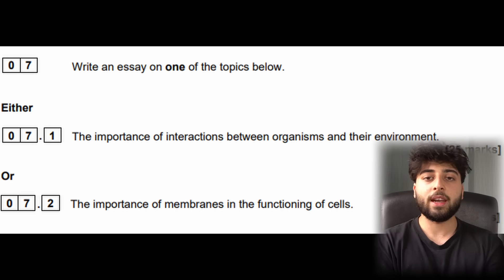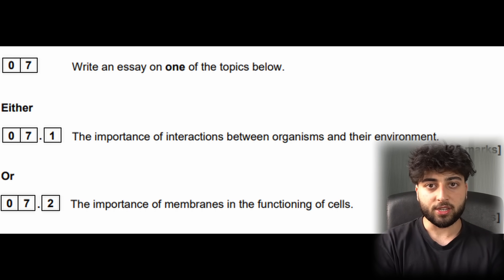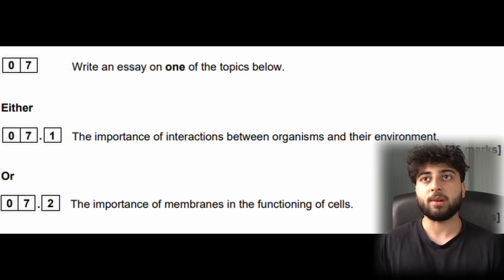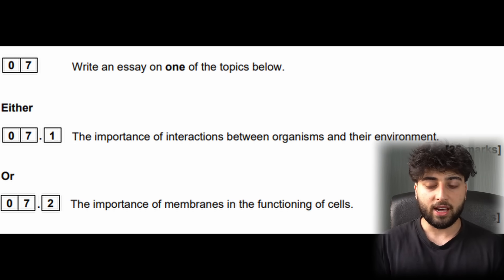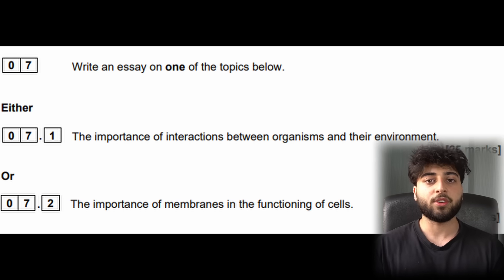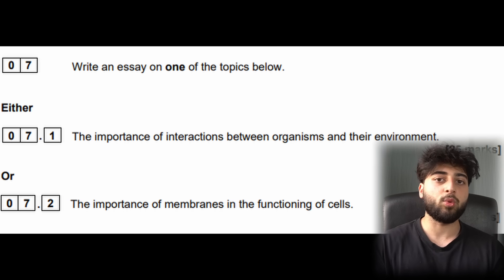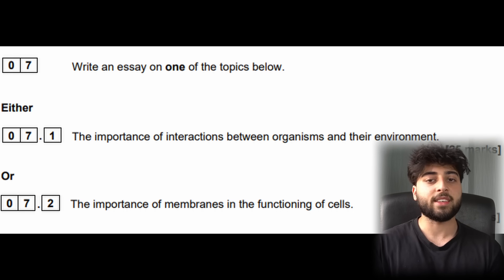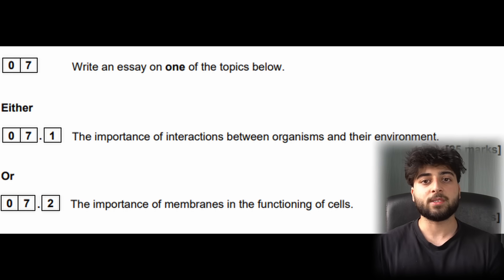In terms of writing the plan, the first thing I want to make clear is that you want to answer the question. For 'the importance of interactions between organisms and their environment,' that means you cannot talk about organelles. The most likely reason you don't get the marks you want is that you're talking about irrelevant things. You can only talk about what the question asks you to talk about.